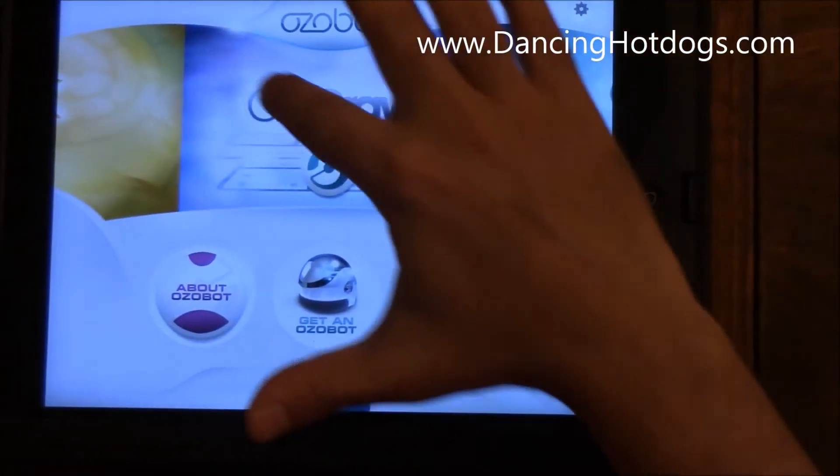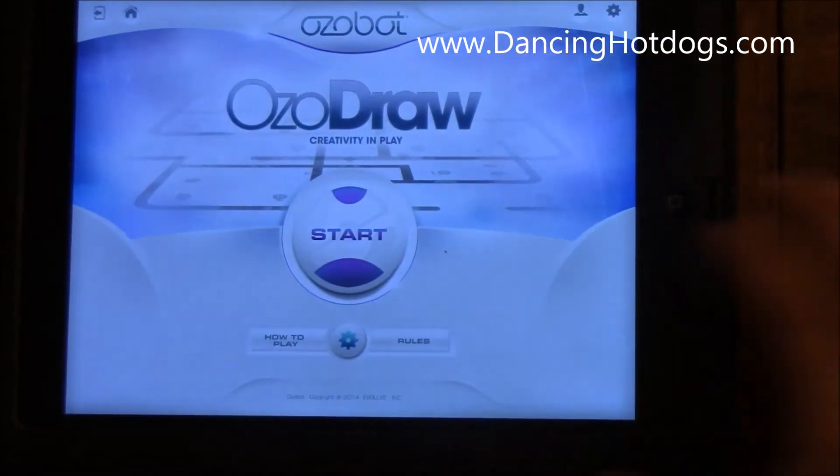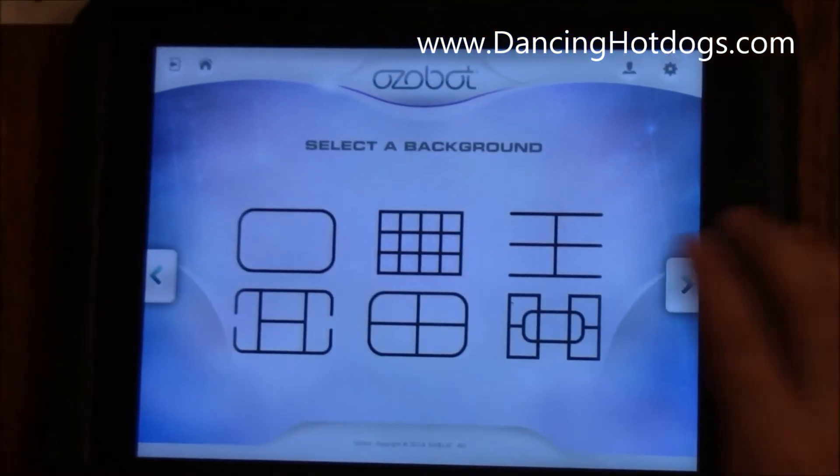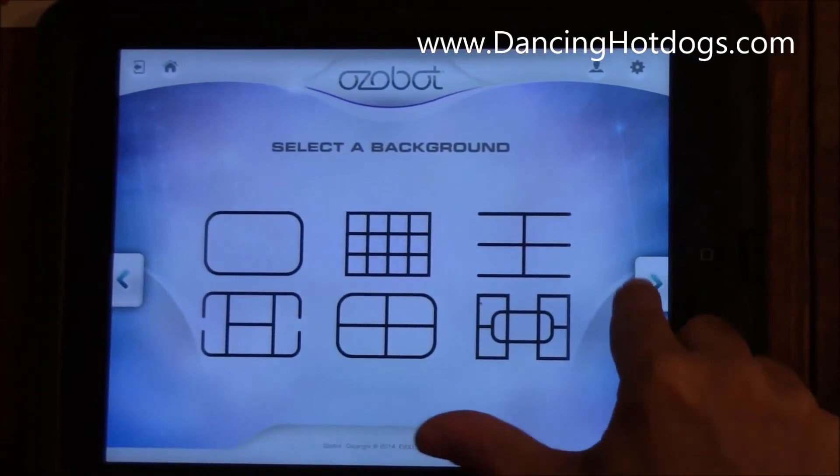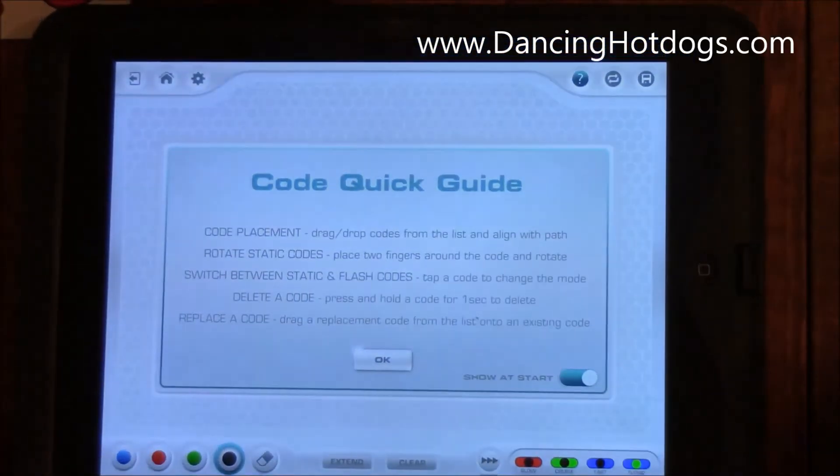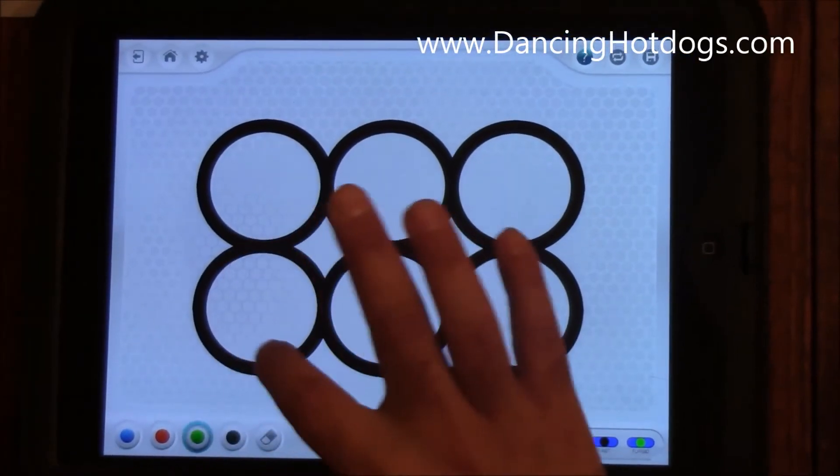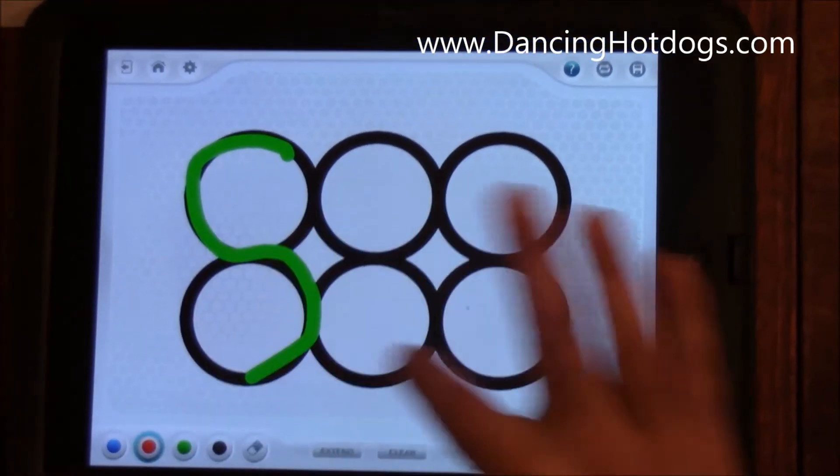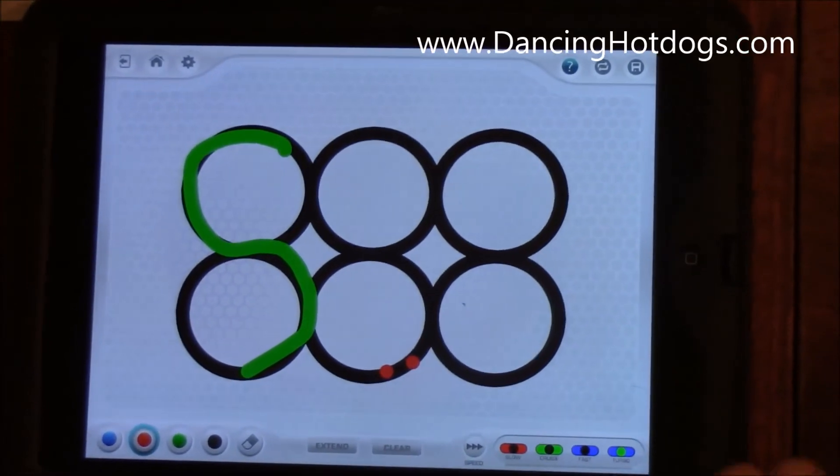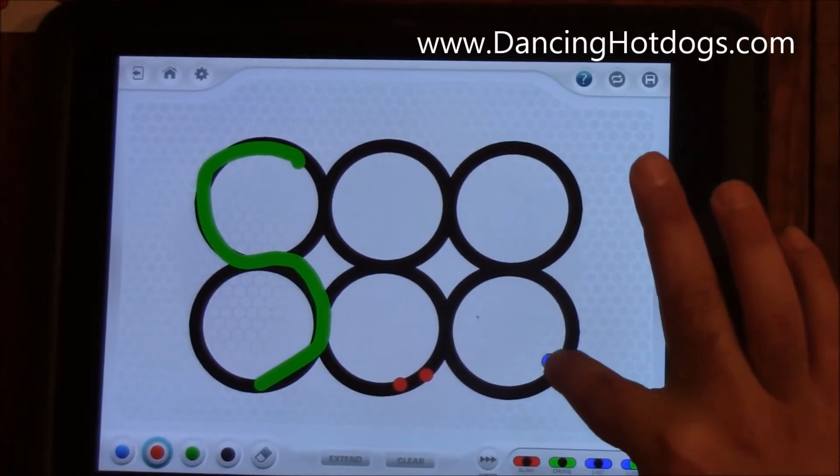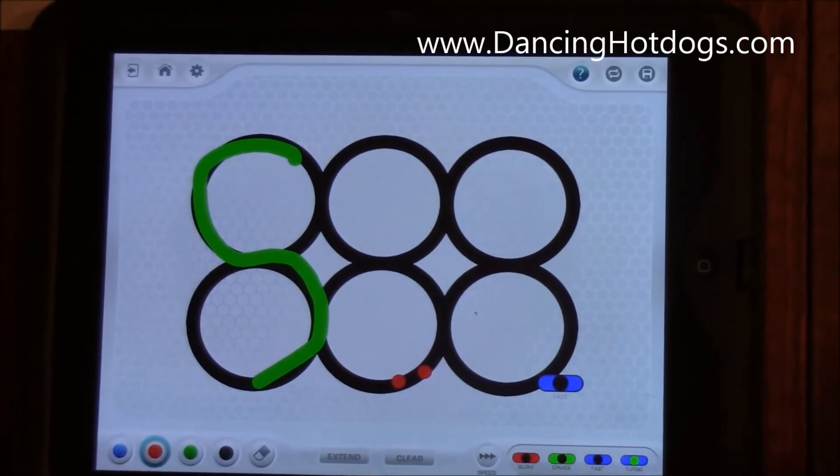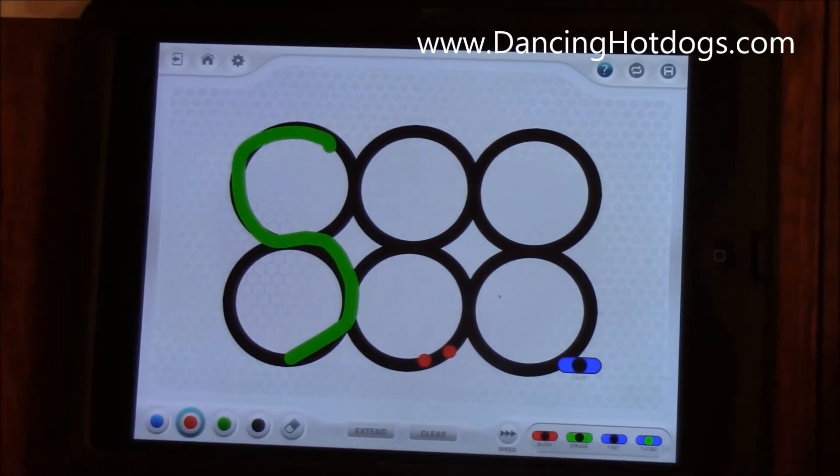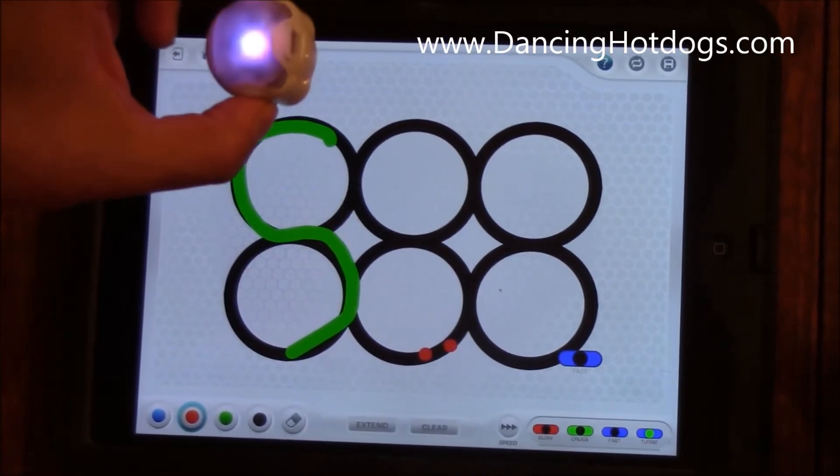You can actually play games, but what I want to specifically show you is Ozodraw, which allows you to basically create tracks and then customize them using colors. You can create codes just as simple as that, make it go faster or slower. You have full customizability that you can bring this little robot along with you anywhere you want.